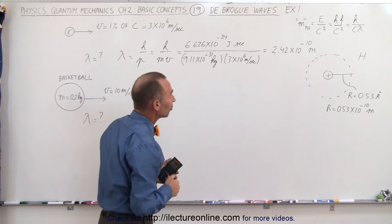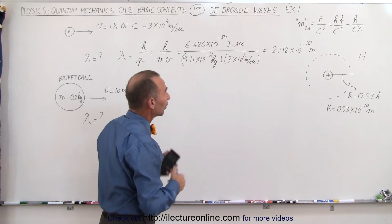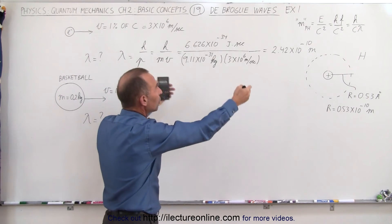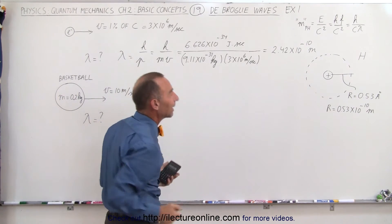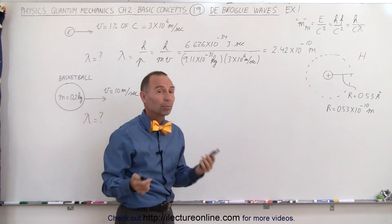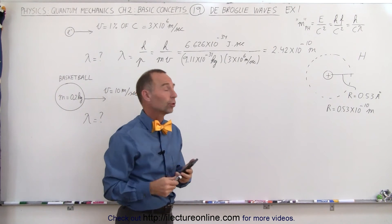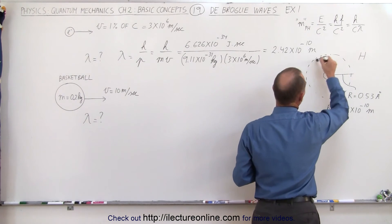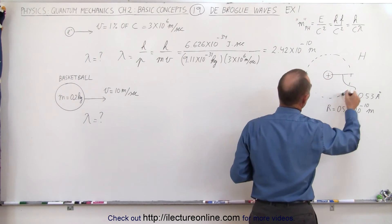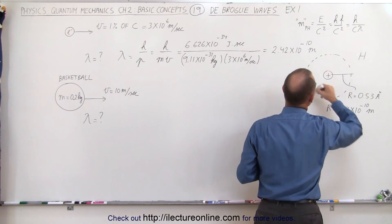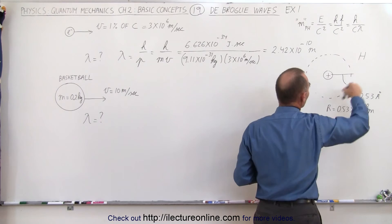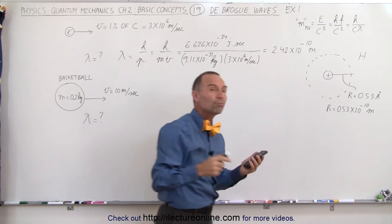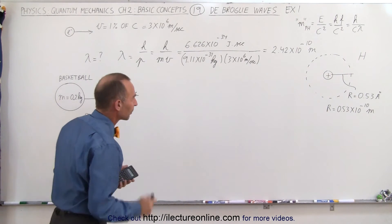Notice that 2.42×10⁻¹⁰ meters is approximately equal to the circumference of the electron's orbit in the hydrogen atom, which means it's reasonable to say the electron moves at approximately 1% the speed of light in the hydrogen atom. There's definitely a relationship there — these are reasonable numbers reflecting real-world phenomena. The electron moves like a wave as it zips around the nucleus at a tremendous number of times per second.